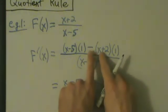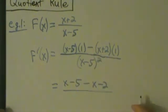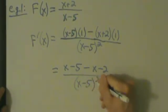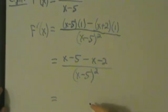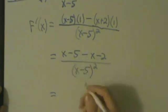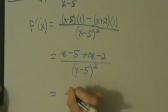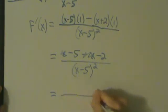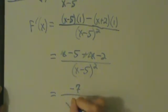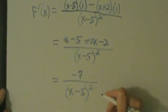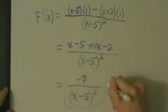But then here, minus x minus 2 is what we have there, and then all this is still being divided by x minus 5 quantity squared. So now we're pretty much there. x minus x, those cancel, and then we have minus 5 minus 2, so that gives us minus 7 on top. So minus 7 over x minus 5 quantity squared. That's our answer for our derivative.